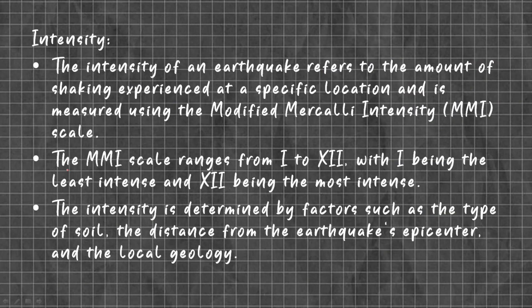Coming to the intensity: the intensity of an earthquake refers to the amount of shaking experienced at a specific location and is measured using the Modified Mercalli Intensity scale. The MMI scale ranges from 1 to 12, with 1 being the least intense and 12 being the most intense. The intensity is determined by factors such as the type of soil, the distance from the earthquake's epicenter, and local geology. These are the measurement scales of an earthquake.